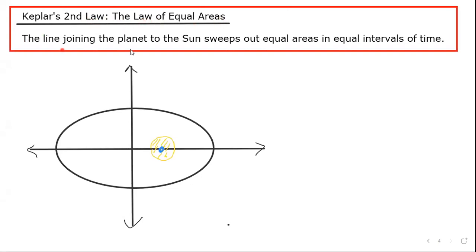And when you write out the law, it's a little bit of a mouthful. It says the line joining the planet to the sun sweeps out equal areas in equal intervals of time.